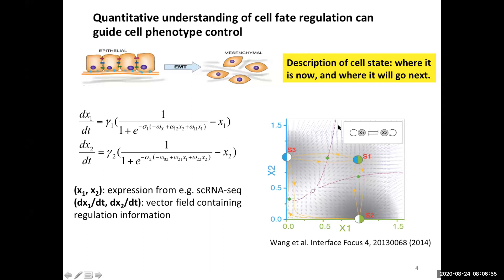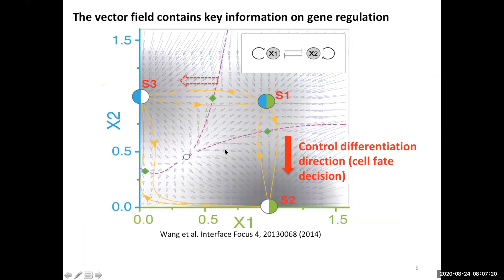Consider a toy model with two genes that interact with each other. The dynamics are governed by a set of mathematical equations. The variables x1 and x2 are the expression of genes, which can be measured experimentally. dx1/dt and dx2/dt form a vector field that contains regulatory information. For a given state with x1, x2, there is a vector that tells where and how fast this cell will move next.